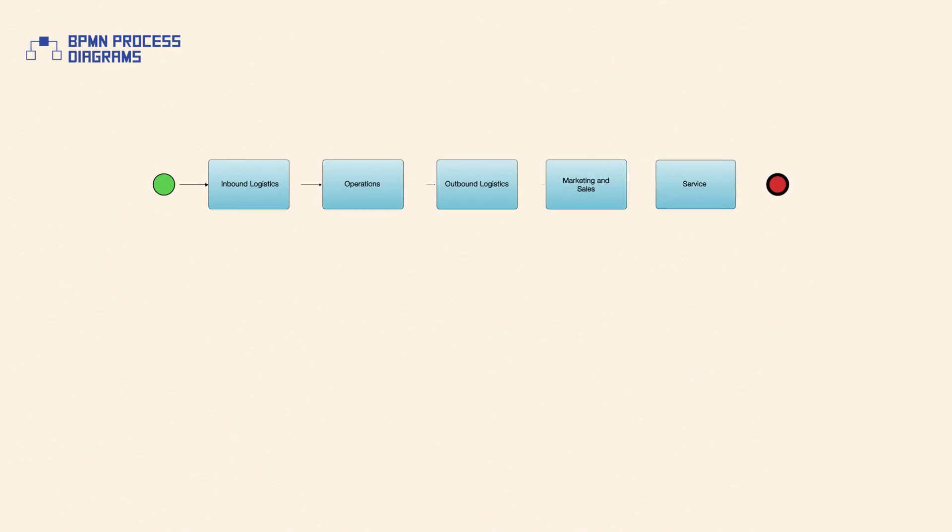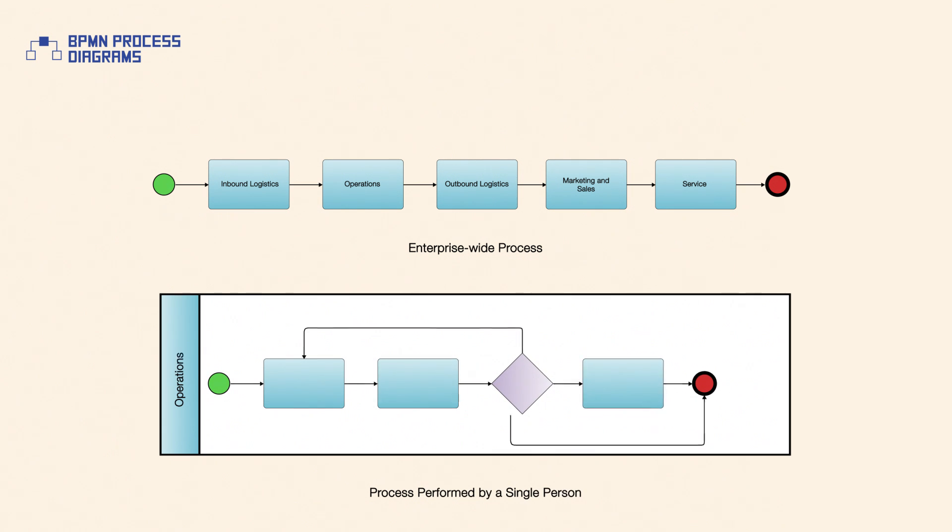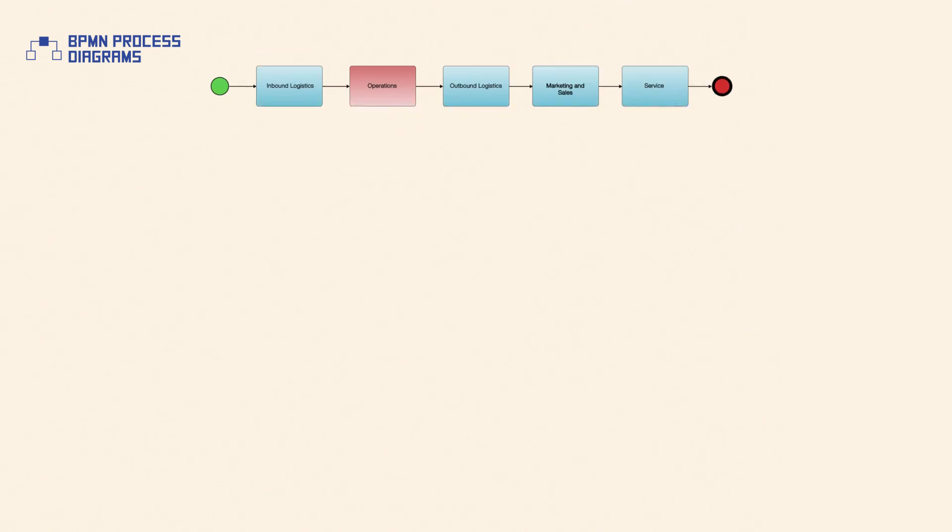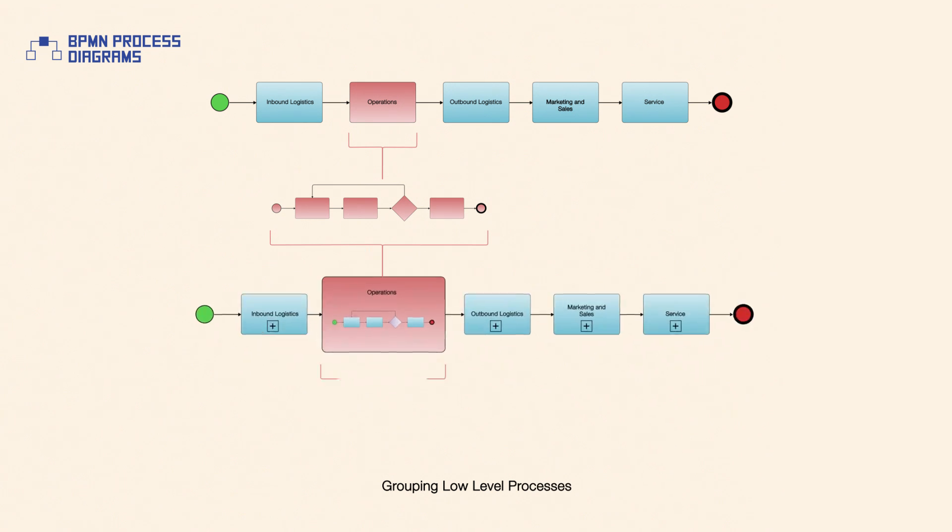Processes can be defined at any level, from enterprise-wide processes to processes performed by a single person. Low-level processes can be grouped together to achieve a common business goal.